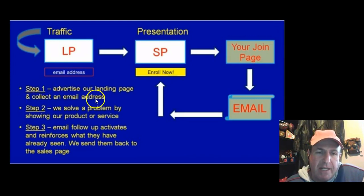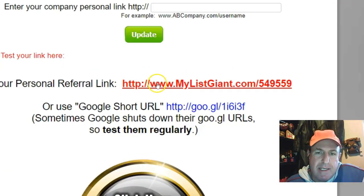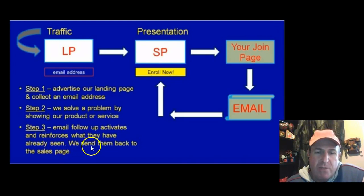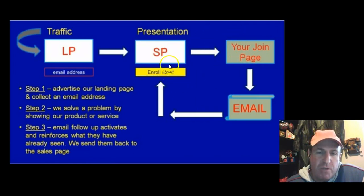The sales funnel is broken into three steps. Step 1: advertise your landing page and collect an email address — all you're doing is advertising your link. Step 2: we solve a problem by showing a product or service on the presentation page. Step 3: email follow-up activates and reinforces what they have already seen — we send them back to the sales page. The email follow-up just reinforces what they've already seen and keeps taking them back over a period of one to two weeks.